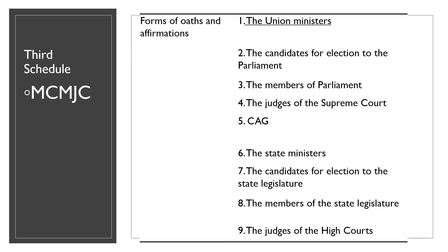The third schedule talks about forms of oaths and affirmations. Oaths are taken by people who believe in God and affirmations are taken by non-believers. Forms of oaths and affirmations are given for nine offices in the third schedule. The trick to remember them is MCMJC. The JC is the same as discussed in the second schedule — Judges of the High Court and Judges of the Supreme Court — and C stands for Comptroller and Auditor General.